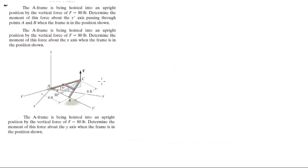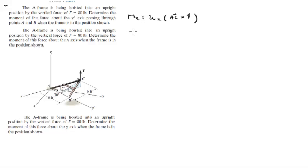Alright guys, now we are going to do the second part of the problem where they want you to find the moment about the x-axis. The moment about the x-axis is given by the unit vector in x times vector AC cross F. The unit vector in x is 1i plus 0j plus 0k.